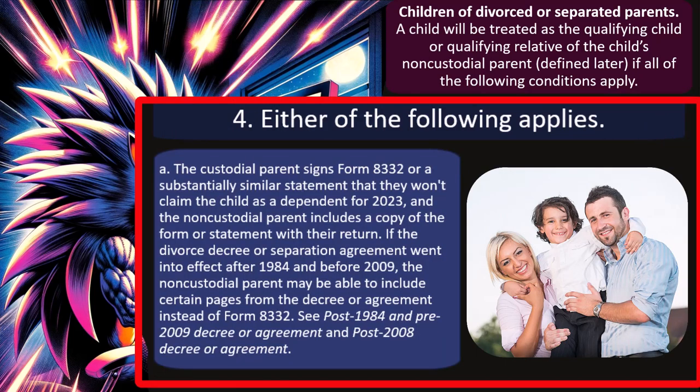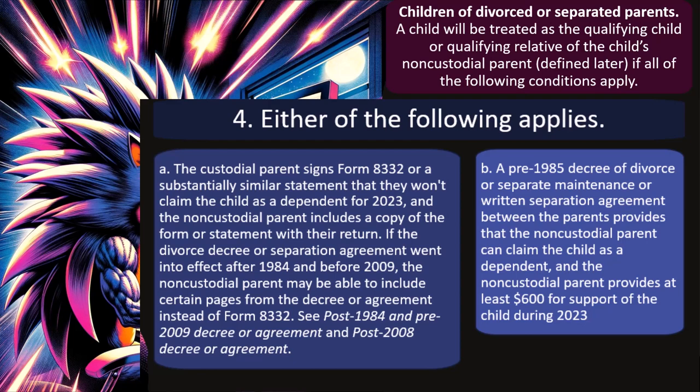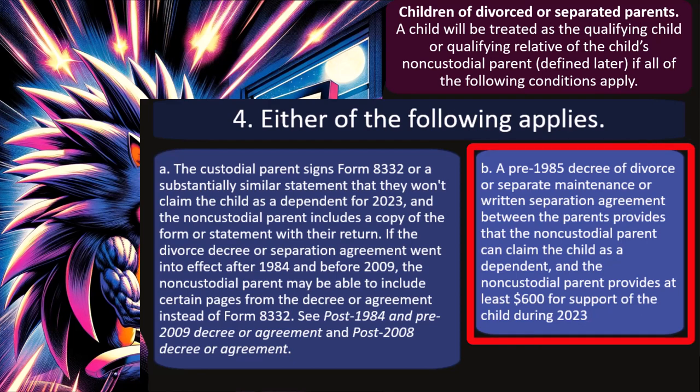Number four, either of the following applies: (A) the custodial parent signs Form 8332 or a substantially similar statement that they won't claim the child as a dependent for 2023, and the non-custodial parent includes a copy with their return. If the divorce decree or separation agreement went into effect after 1984 and before 2009, the non-custodial parent may be able to include certain pages from the decree instead of Form 8332. Or (B) a pre-1985 decree provides that the non-custodial parent can claim the child and provides at least $600 for support.